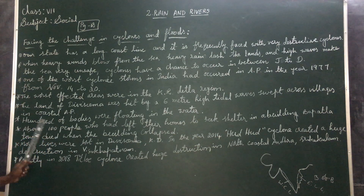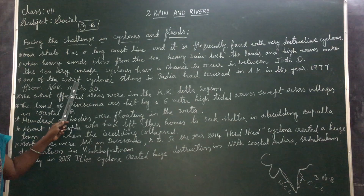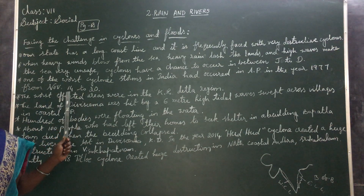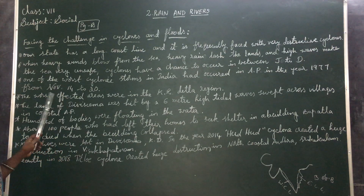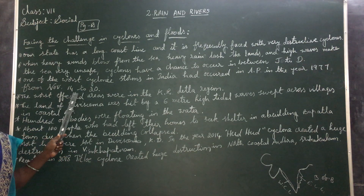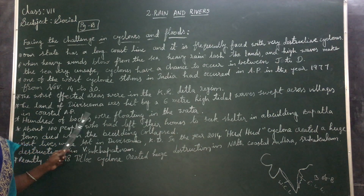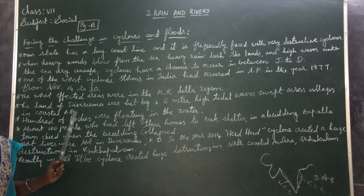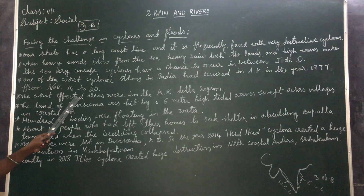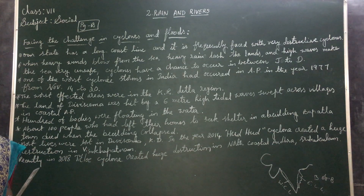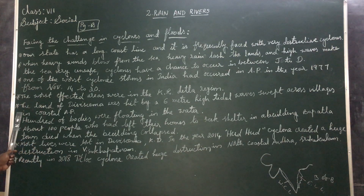Let me repeat the key facts. One of the worst cyclones occurred in India in 1977, November 14 to 20. The area affected was Divisima in the Krishna Delta region of coastal Andhra Pradesh. The land of Divisima was hit by 6-meter high tidal waves that swept across the villages.